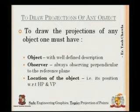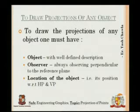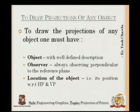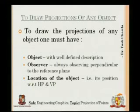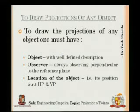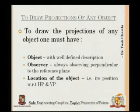There are three basic things needed to draw the projection of any object: first, the object itself; second, the observer — in our demonstration the torch acts as the observer; and third, the location of the object with respect to HP and VP. You need a particular distance in front of VP and a particular height from HP to locate the point in the quadrant — a Y coordinate for height on VP and an X coordinate for distance from the XY line.